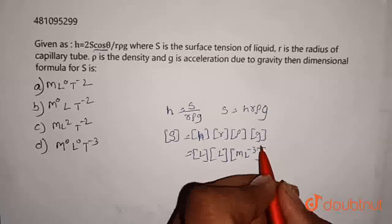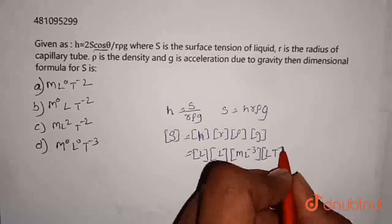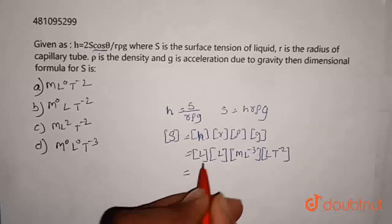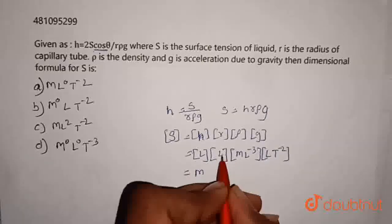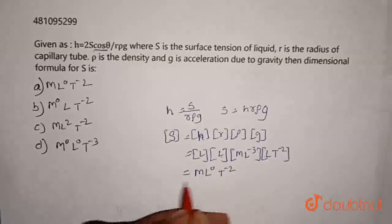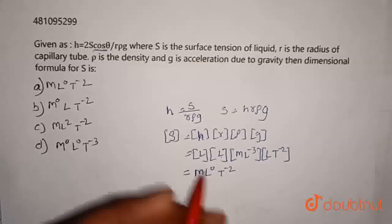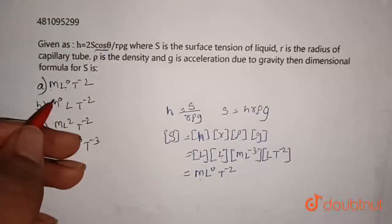And g is acceleration due to gravity which is an acceleration, whose dimensions are LT^-2. By substituting all this and solving, we get ML^0T^-2. Hence, dimensions of surface tension is ML^0T^-2, which is option A.